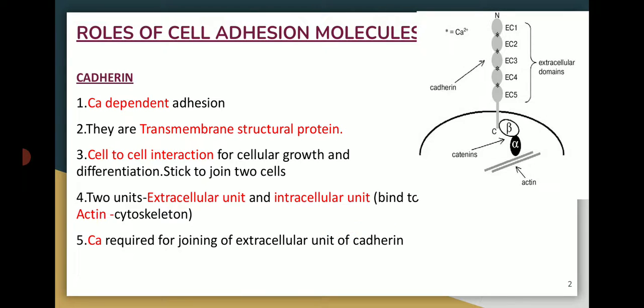The first important cell adhesion molecule is called cadherin. From the name itself, it denotes a calcium-dependent adhesion molecule. This is a transmembrane structural protein, and for every cell-to-cell interaction, cadherin molecules are very important so that two cells can communicate together. This molecule has two components: an extracellular unit and an intracellular unit.